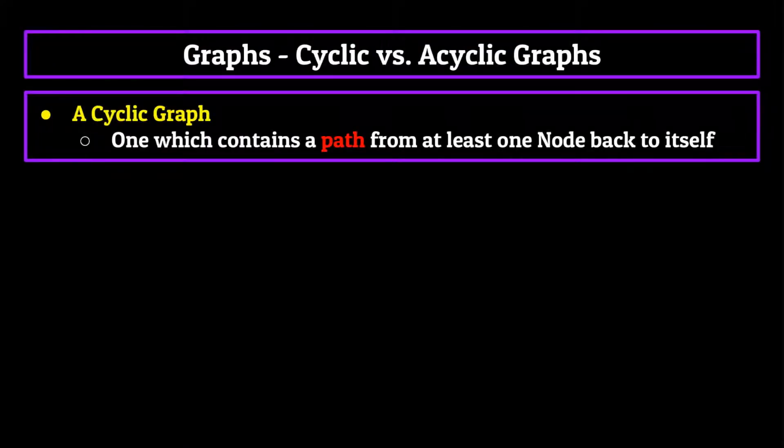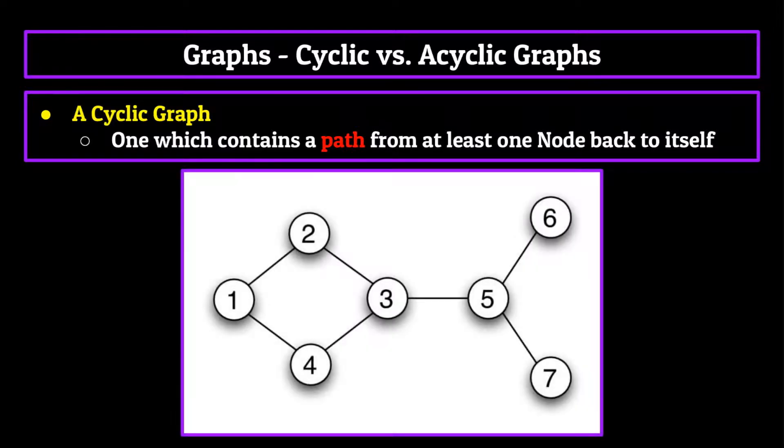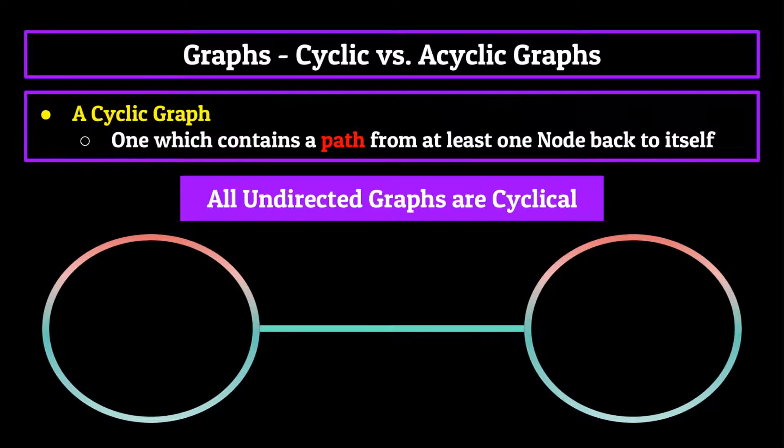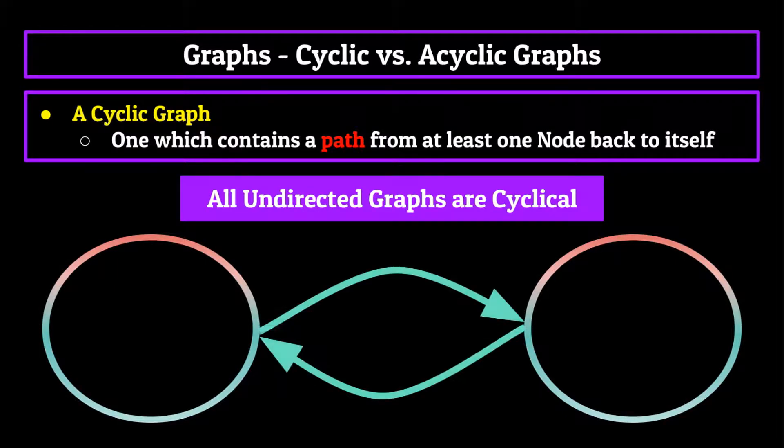A cyclical graph is one which contains a path from at least one node back to itself. So you can see by the example on your screen now that the four node leads to the three node, which then leads to the two node, which finally leads back to the four node forming a cycle. A small thing to note here is that all undirected graphs end up being cyclical. This is because the bi-directional nature of the nodes within undirected graphs theoretically forms a cycle between any two nodes. So judging by that logic, all undirected graphs are cyclical.